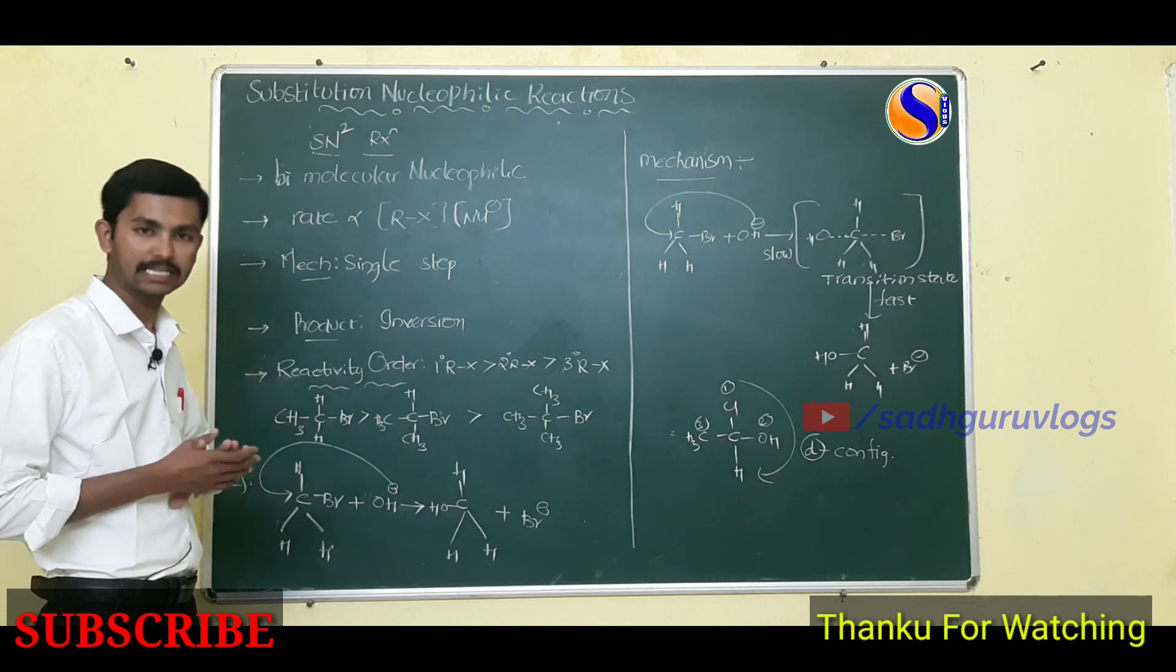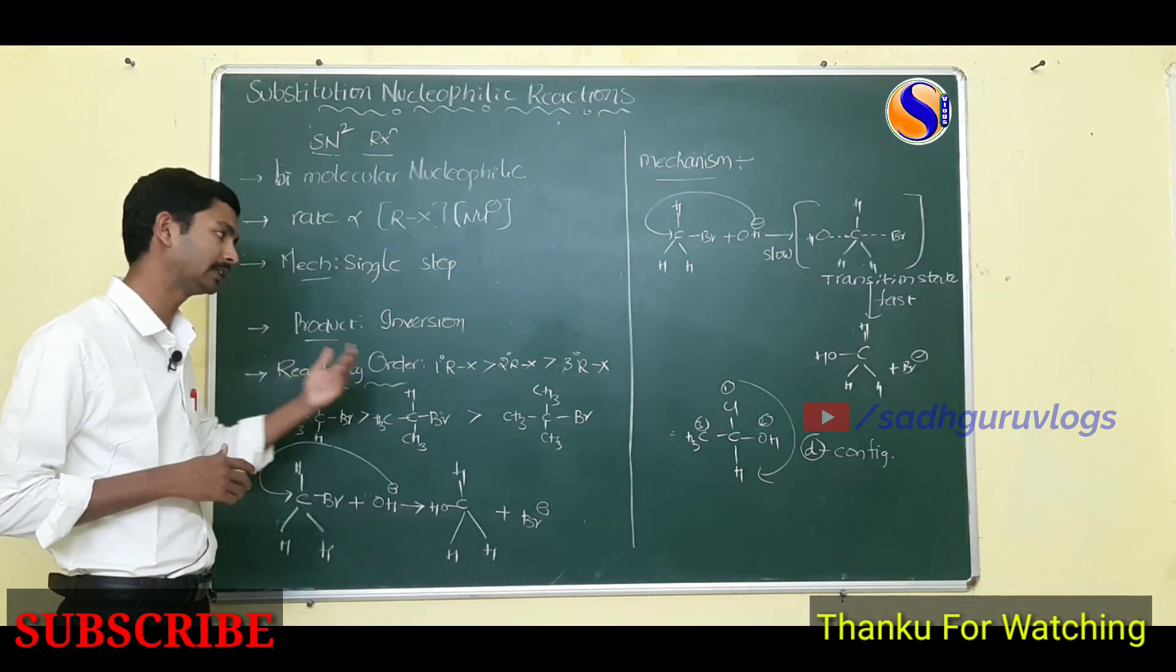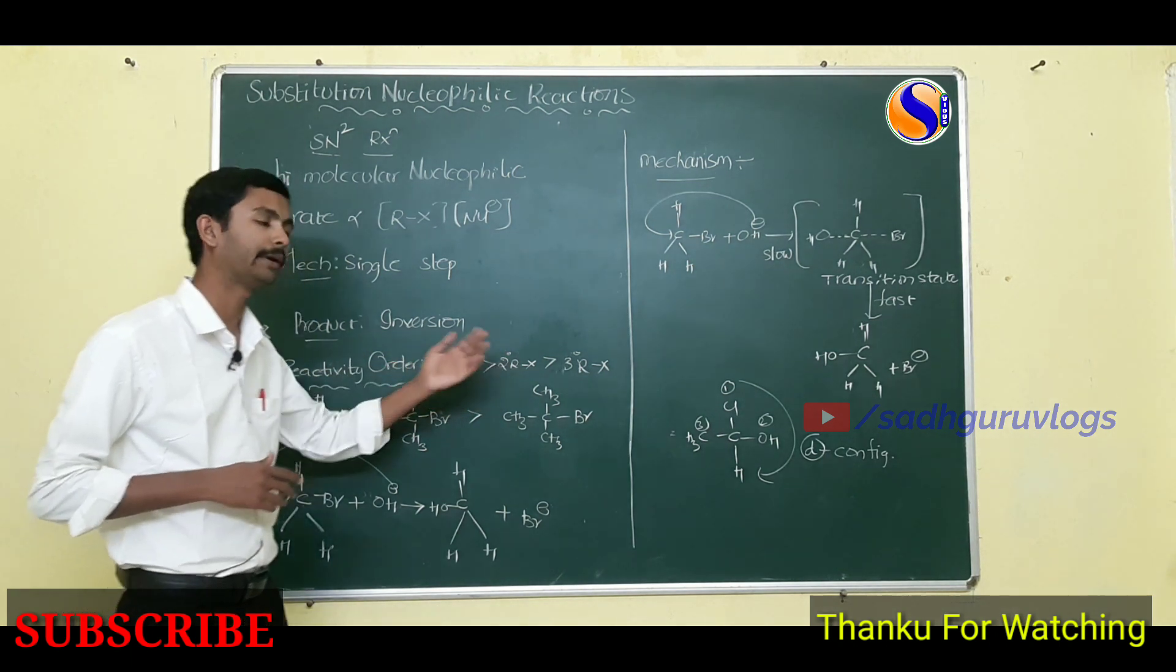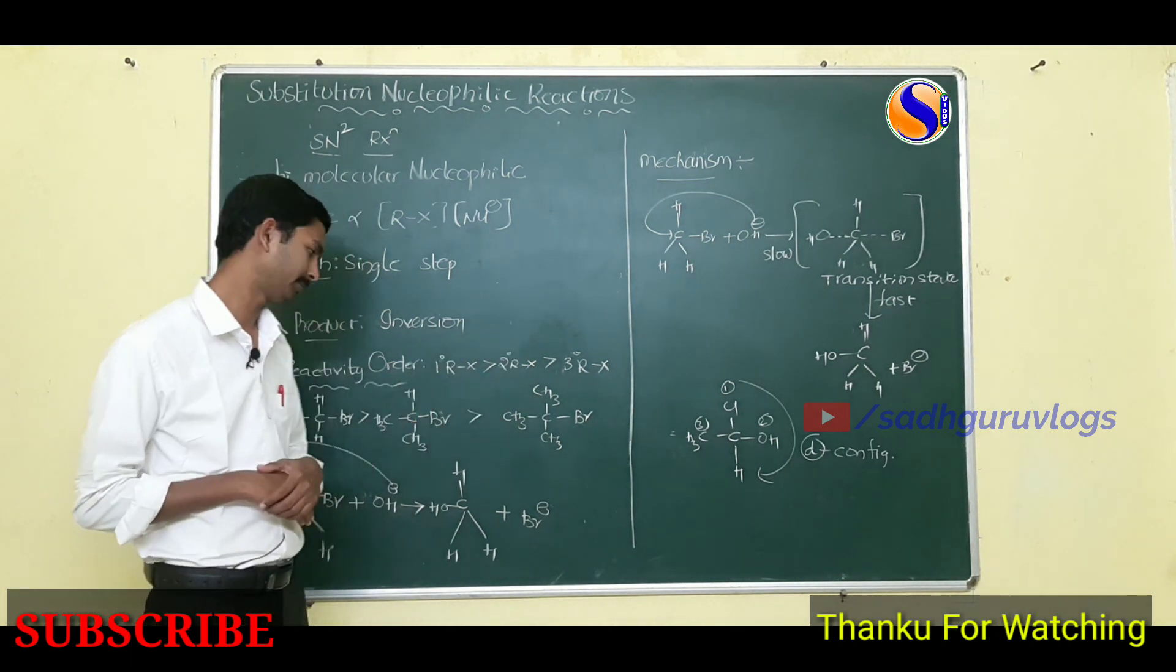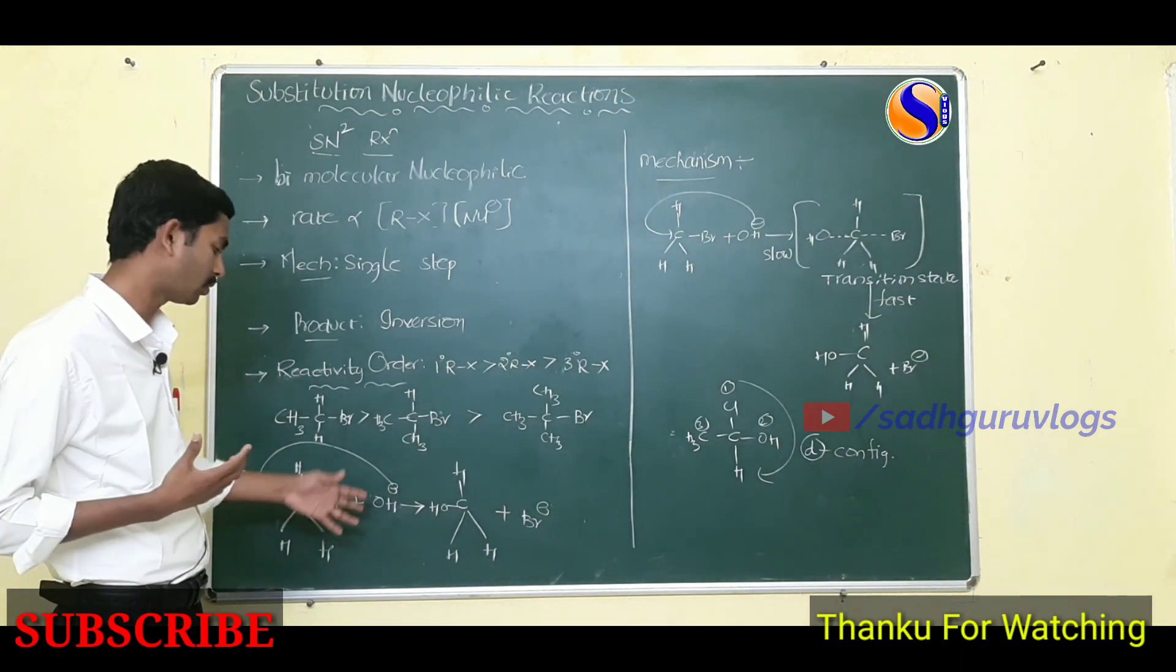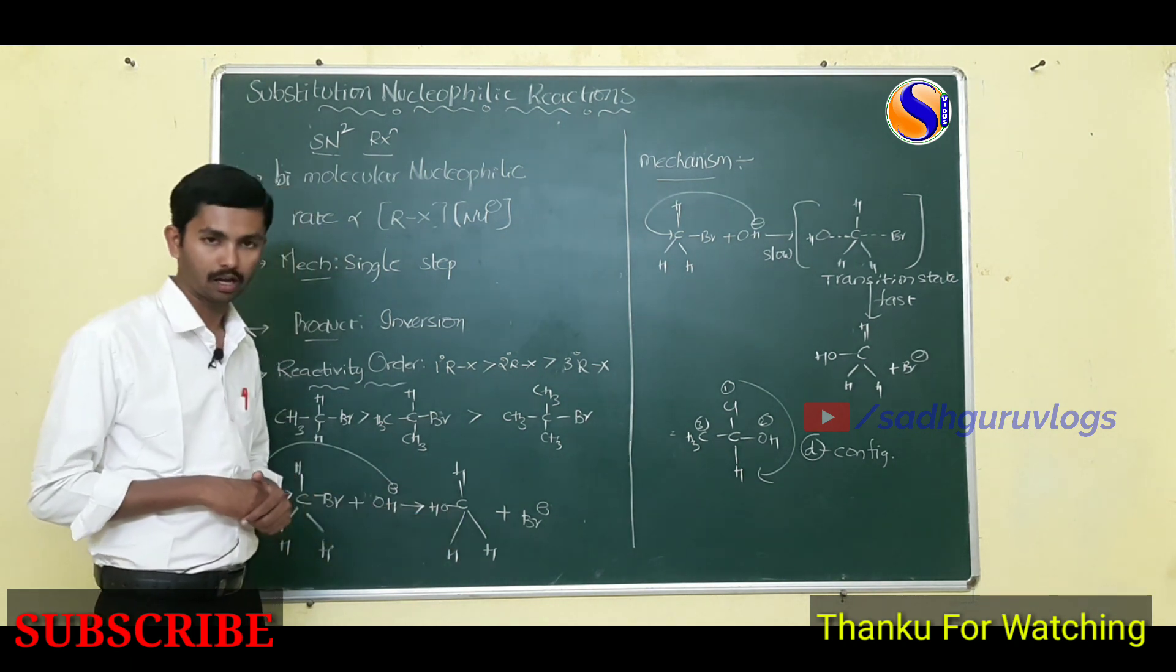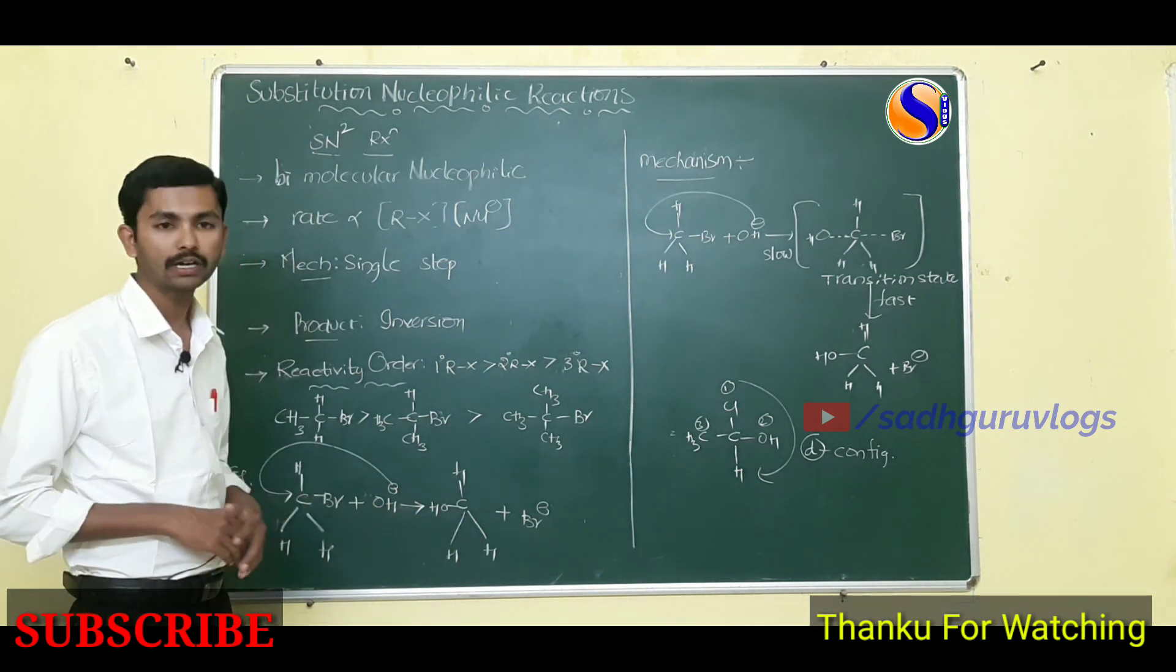The reactivity order for SN2 reactions is primary alkyl halides showing more SN2 reaction when compared to secondary and tertiary. Next, I give an example here. Methyl bromide when treated with base OH forms the methyl alcohol, an inversion product.